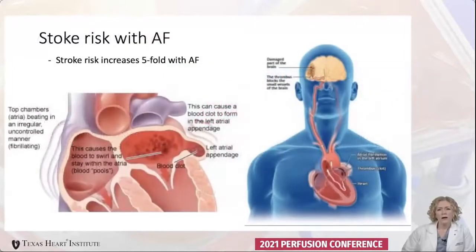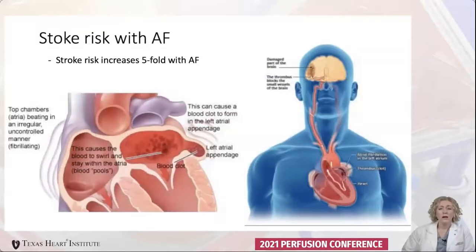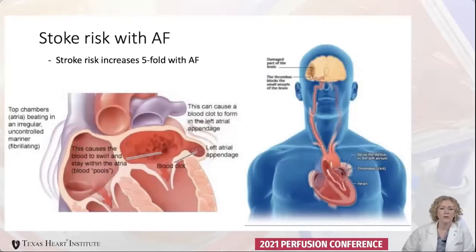AFib causes the atria to beat irregularly, which causes stasis of the blood in the atria and then formation of thrombus. The most common place of thrombus formation is in the left atrial appendage. The clot can then embolize into the bloodstream, leaving the heart, and end up lodged in the cerebral circulation causing a stroke. AFib increases stroke risk on average five-fold, and the strokes caused by AFib are typically more severe.